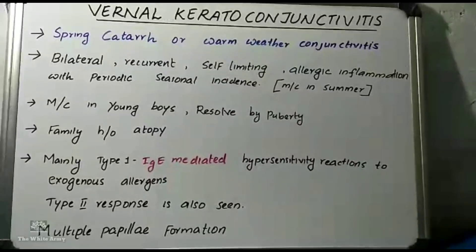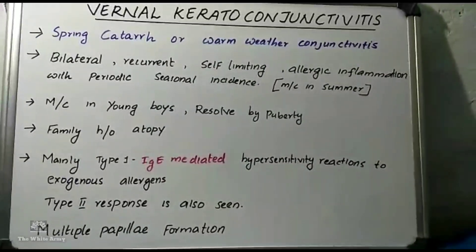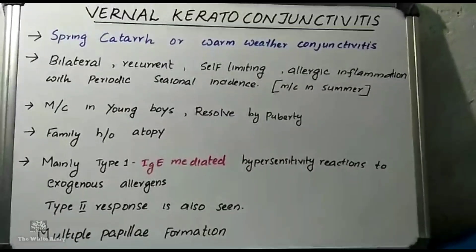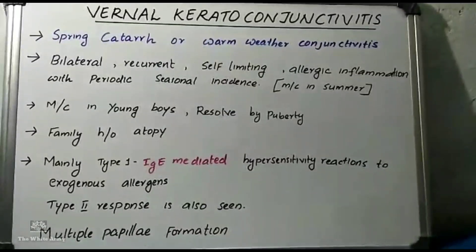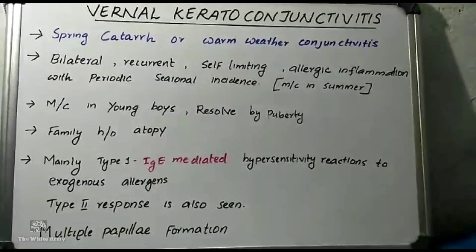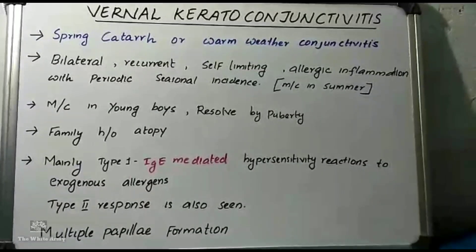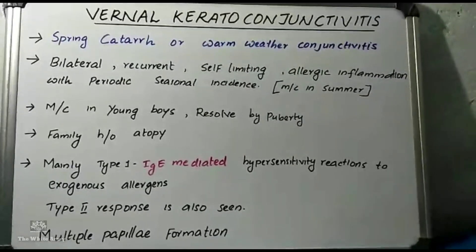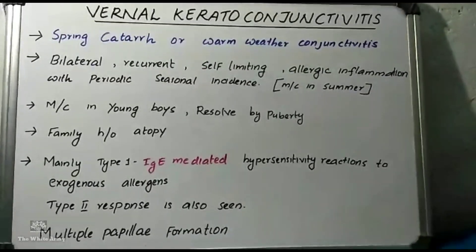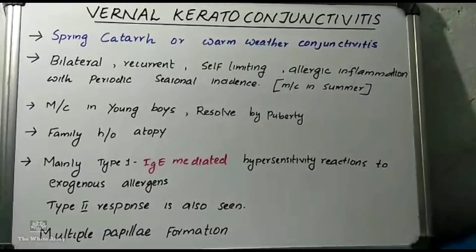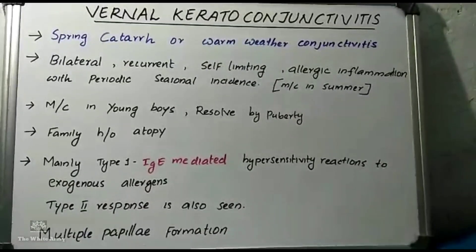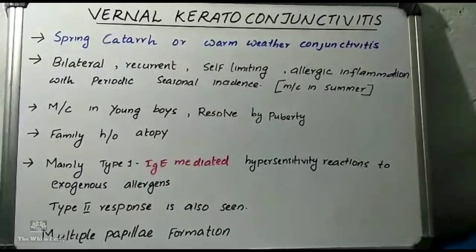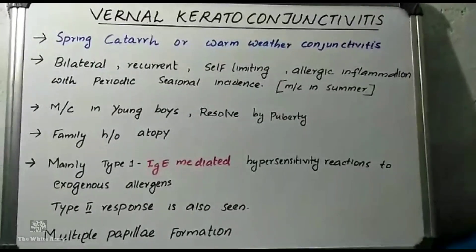Vernal keratoconjunctivitis is bilateral, recurrent and self-limiting allergic inflammation with periodic seasonal incidence. It most commonly occurs in the summer season and is hence also known as warm weather conjunctivitis. It is more commonly seen in young boys around the age group of 4 to 20 years and resolves by puberty. Usually there is a family history of atopy.